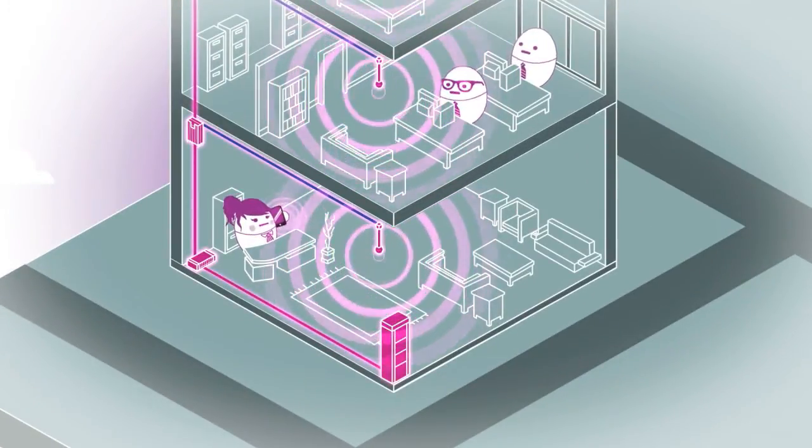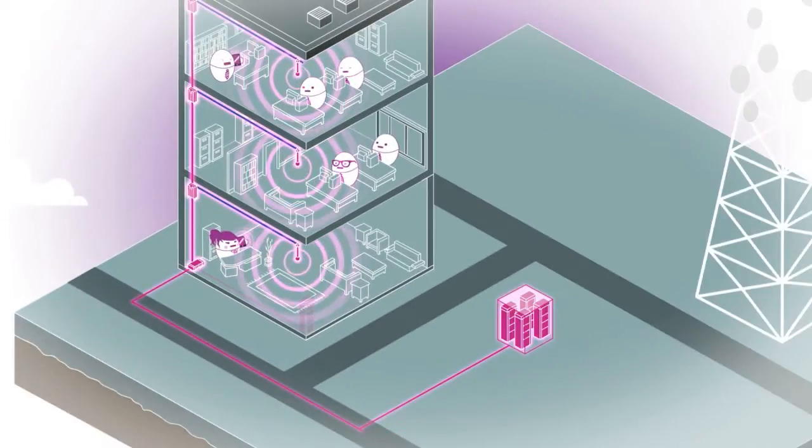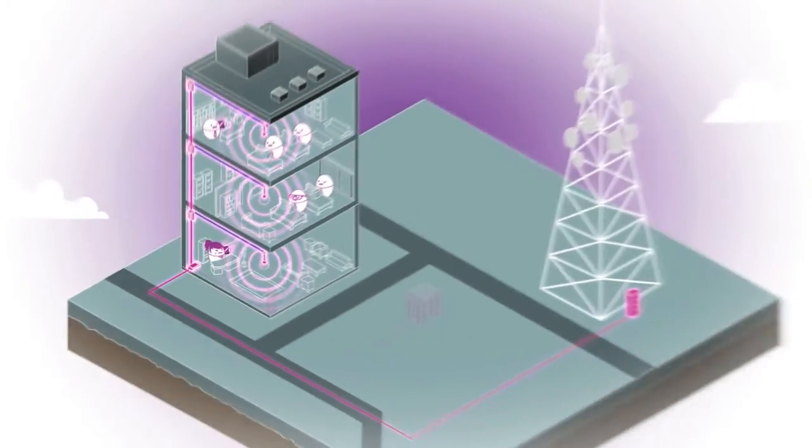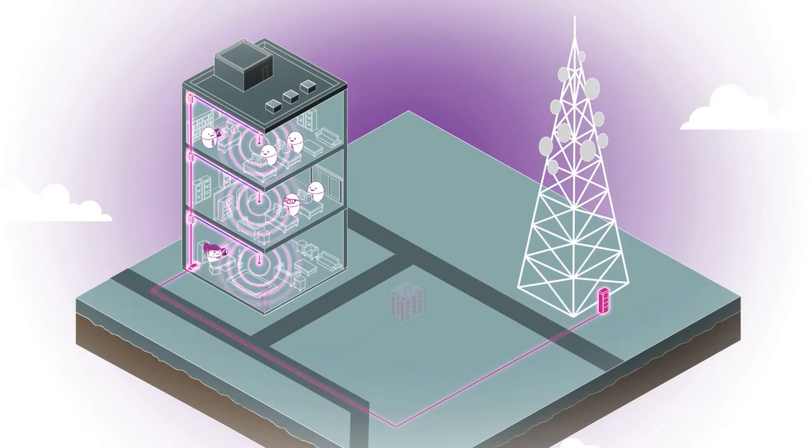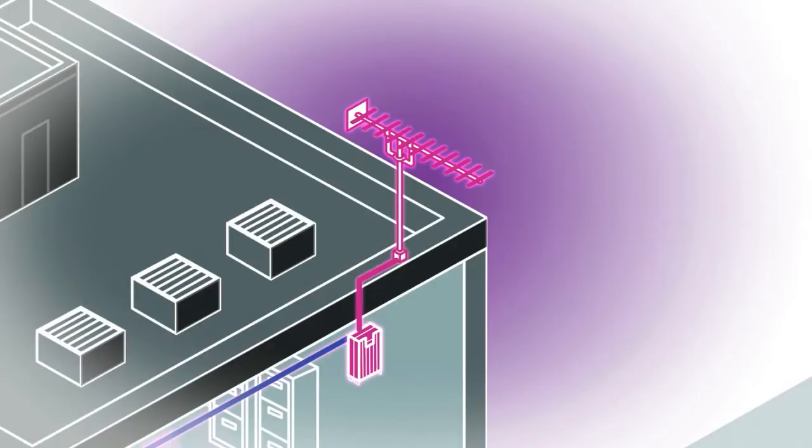A DAS can either be connected to a base station inside the building, a base station hotel, or directly to one or more external base stations located up to several kilometers away. Another option is to feed the DAS using an off-air digital repeater.